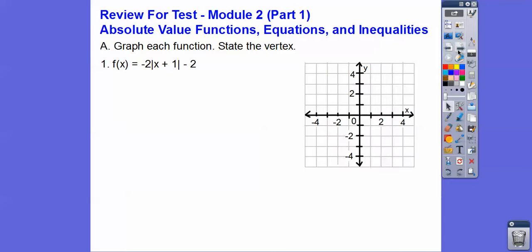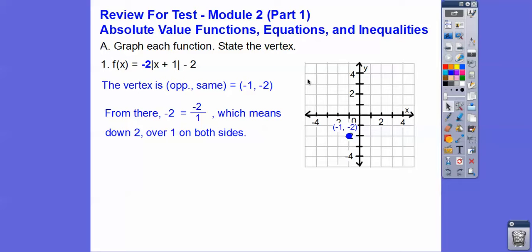This is an absolute value graph. The vertex is opposite this number, same of that number, so negative 1, negative 2 — so over 1, down 2. We use this negative 2 to tell us how much to go down: down 2 over 1 on both sides. Connect them up and there's our absolute value graph.